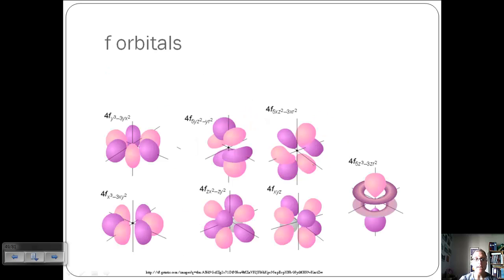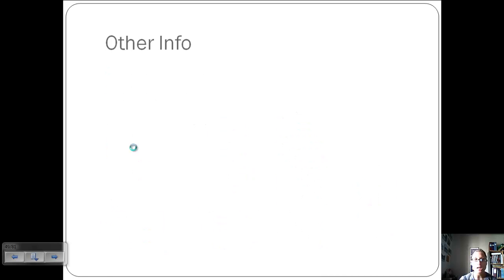Then we get into f, which gets even more complicated. They don't start until n equals 4, because our l value needs to equal 3 in order to have f subshells. Again, remember, these are representing those probabilities of electron locations. Like we said before, we don't see f and g. I couldn't even find a picture, so they're very uncommon.